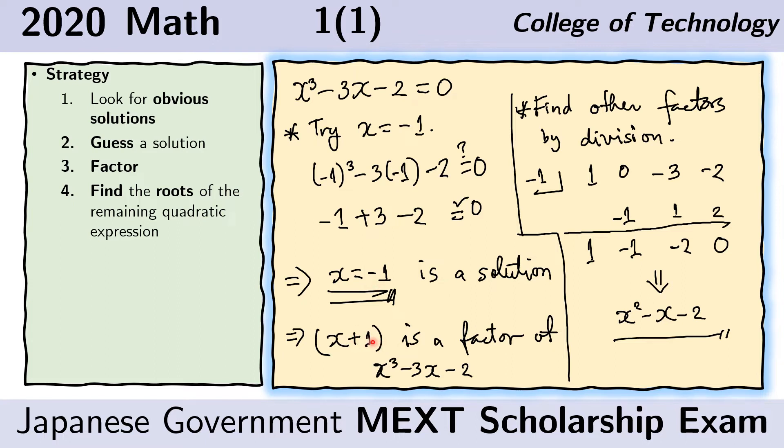And if x plus 1 is a factor, then we can divide this given polynomial by x plus 1. And the quotient should be another factor of this polynomial. So we used synthetic division. We put the 1, the negative 3, and negative 2. Here we have a 0 term for the x² because the x² term here is missing. So the coefficient is 0. And here we have negative 1 on the divisor.